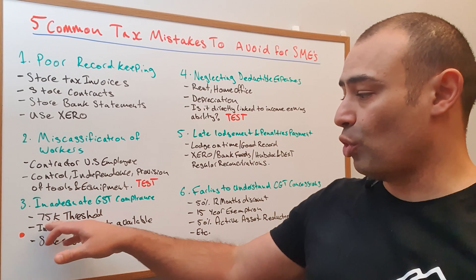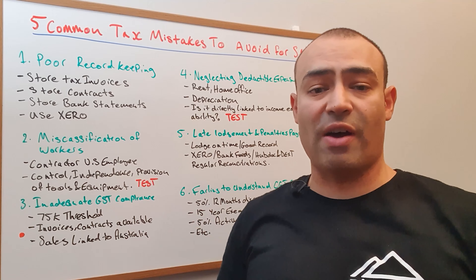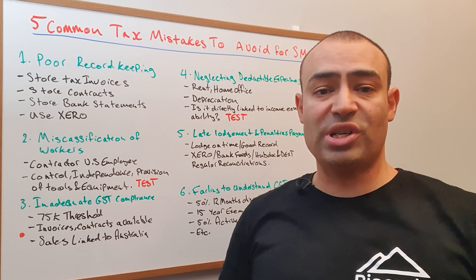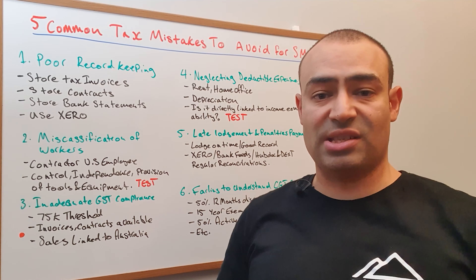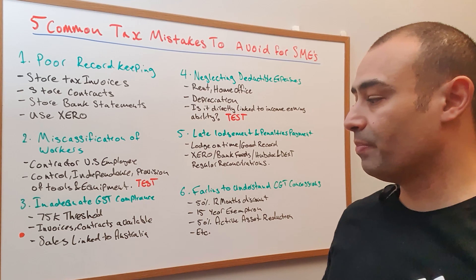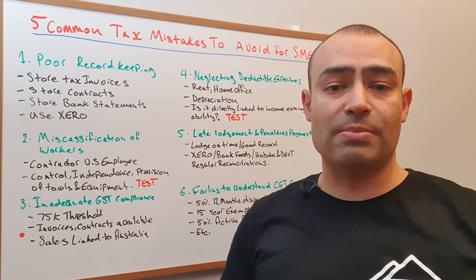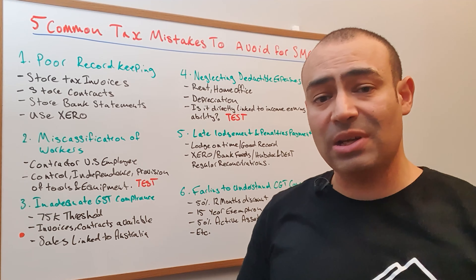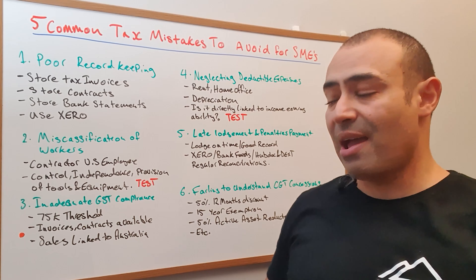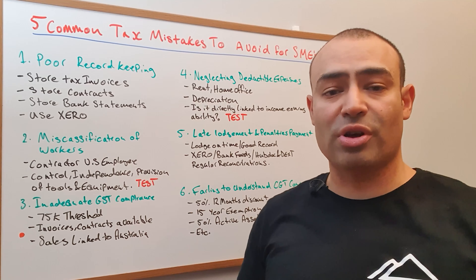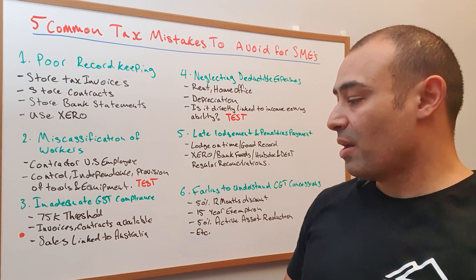Number three on the list is inadequate GST compliance. Here in Australia, if your income hits $75,000 or is projected to hit $75,000, you must register for GST, where your sales need to include GST above that figure. To substantiate and show that the items you have claimed included GST, you should have invoices and contracts showing that those transactions are legitimate.